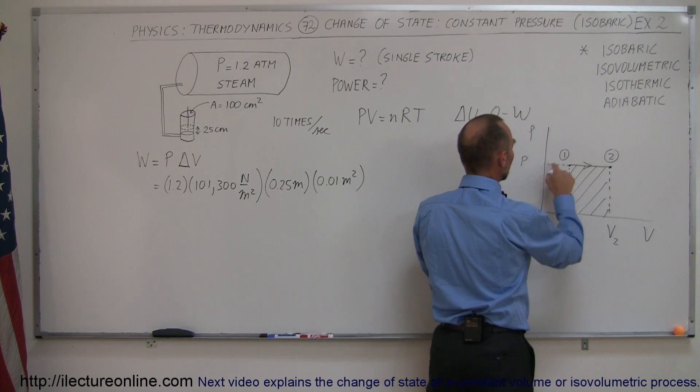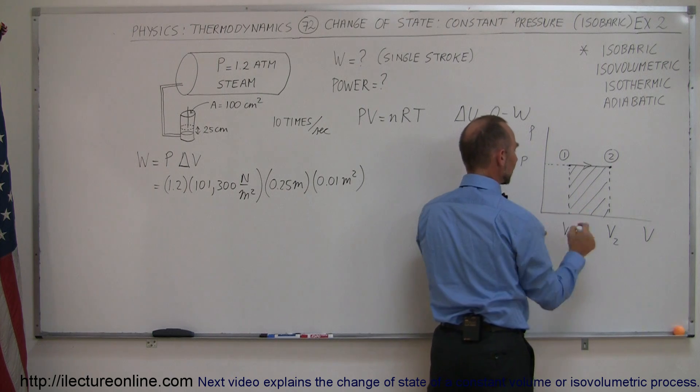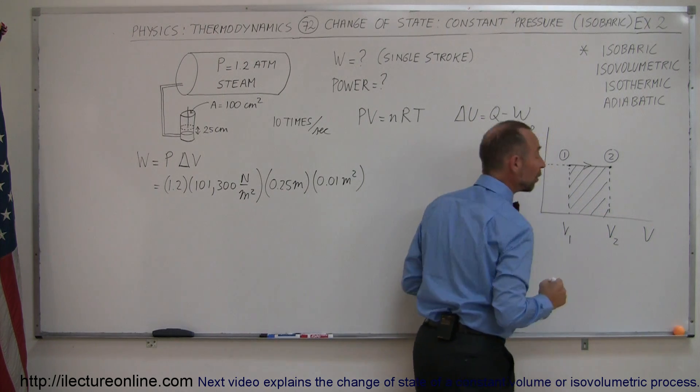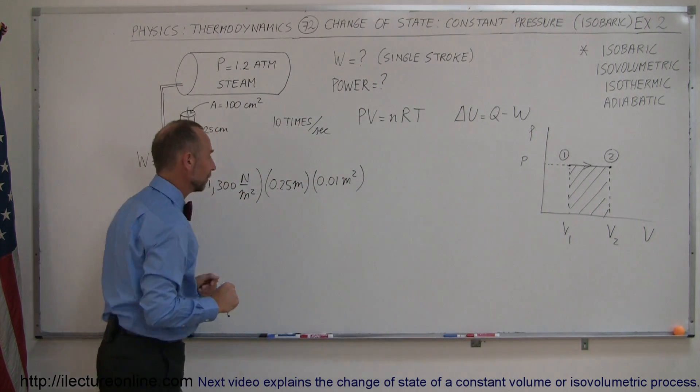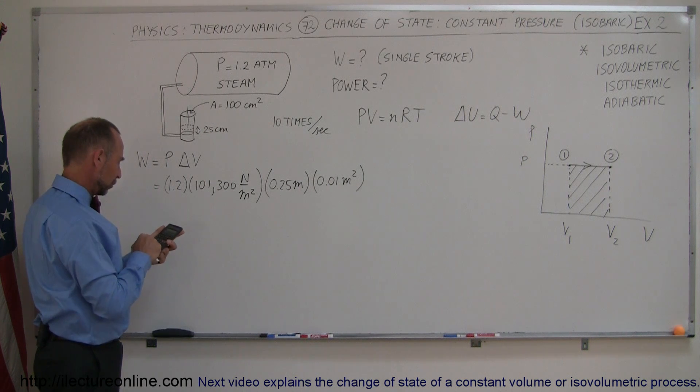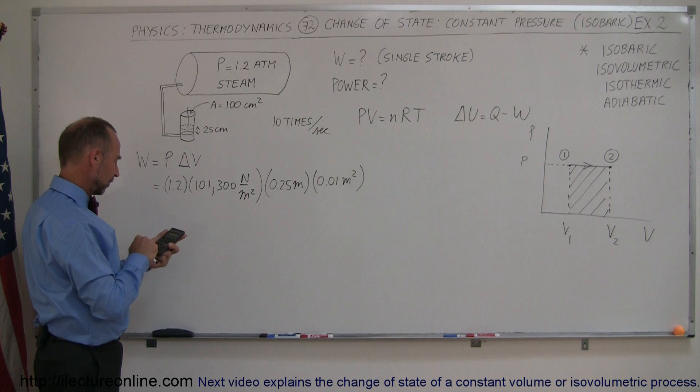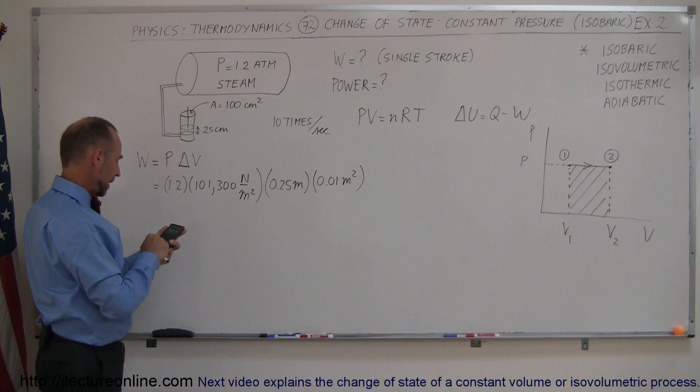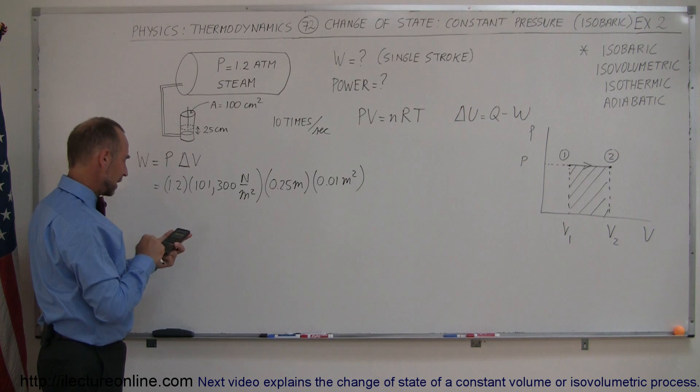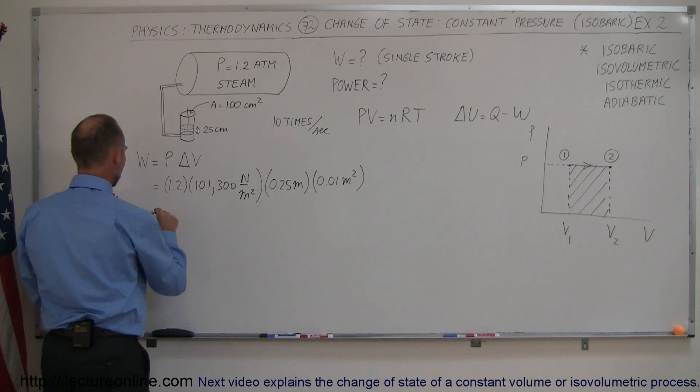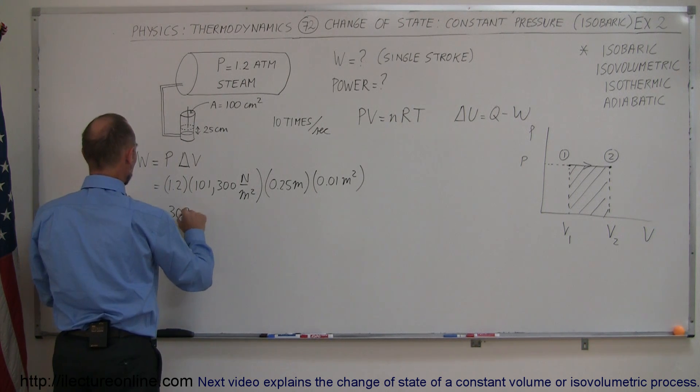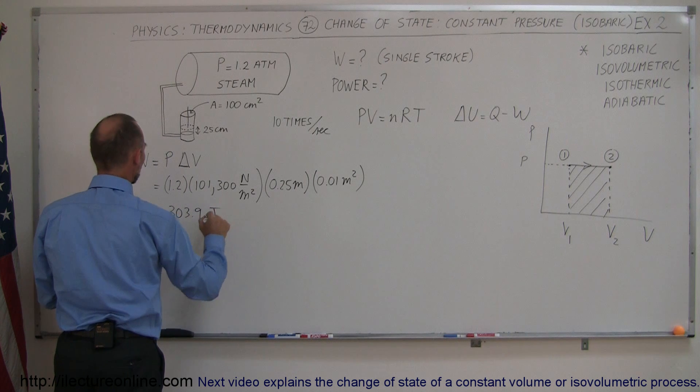And how much work does the gas do? It is the area underneath this PV diagram curve. Now, of course, that would be the pressure, which is this, which is the height of this rectangle, times the change in the volume, which is the width of the rectangle. Let's find out how much that is. 1.2 times 101,300, times 0.25 times 0.01 equals, and that is equal to 303.9 joules.